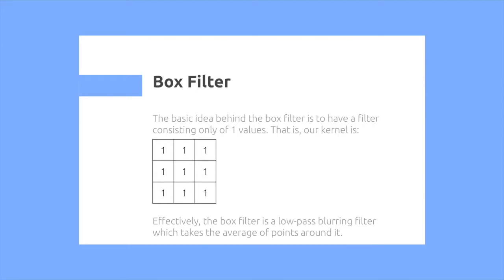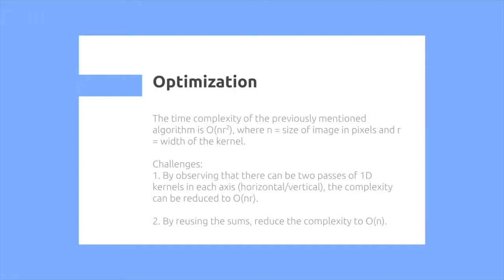Effectively, the box filter is a low-pass blurring filter which checks the average of the points around it. So, this is the most basic one.